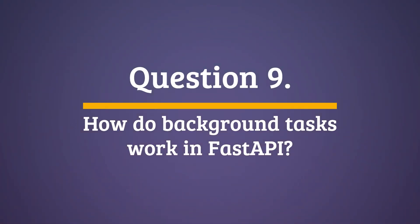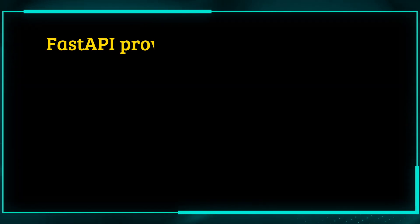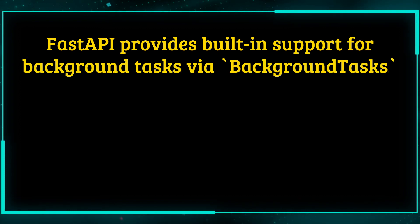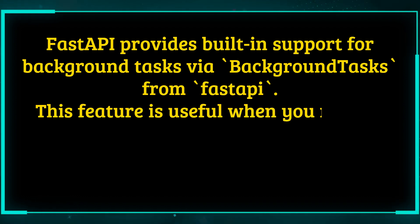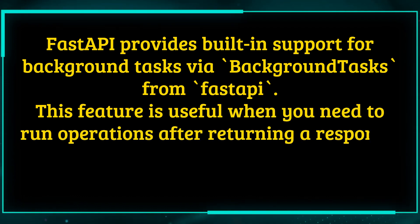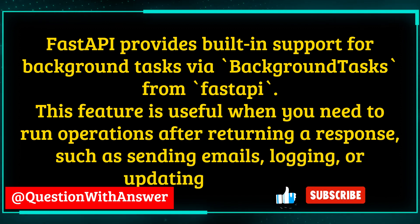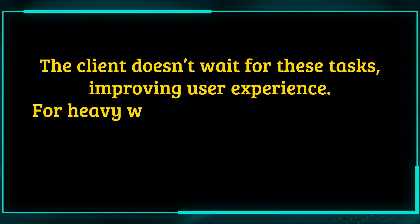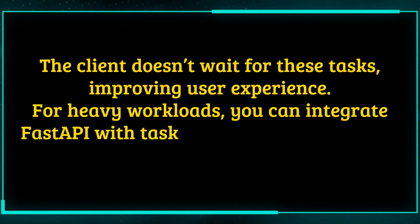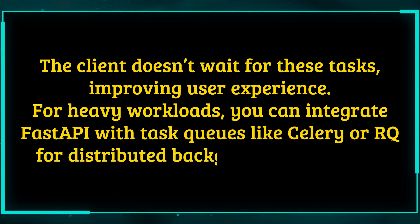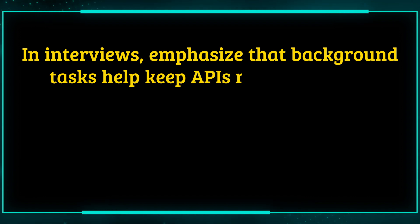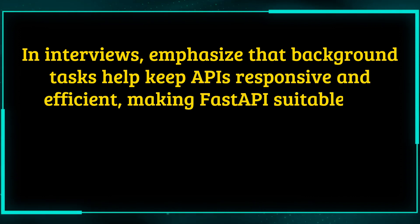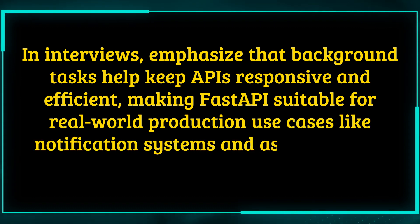Question 9: How do background tasks work in FastAPI? FastAPI provides built-in support for background tasks via BackgroundTasks from FastAPI. This feature is useful when you need to run operations after returning a response, such as sending emails, logging, or updating analytics. The client doesn't wait for these tasks, improving user experience. For heavy workloads, you can integrate FastAPI with task queues like Celery or RQ for distributed background processing. Background tasks help keep APIs responsive and efficient, making FastAPI suitable for real-world production use cases like notification systems and asynchronous logging.